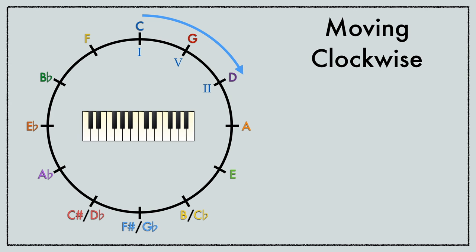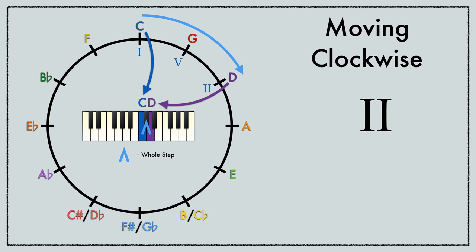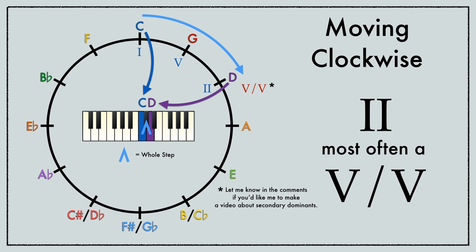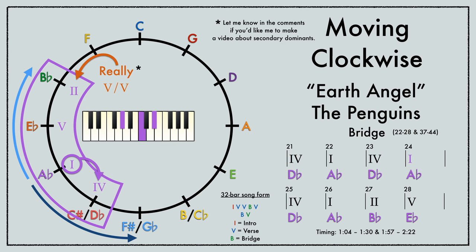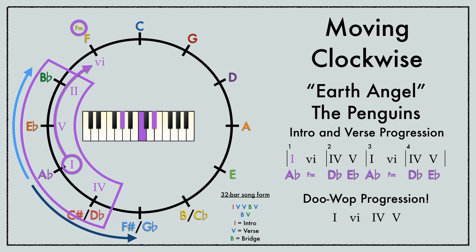If we go clockwise around the circle, we get a major chord a whole step above the key note. This major 2 chord, which is often better described as 5 of 5, is also common. For example, in Earth Angel, originally recorded by the Penguins, the bridge begins toggling between 4 and 1, but then hits on major 2 before moving to 5, which sets up the return of the doo-wop progression verse.